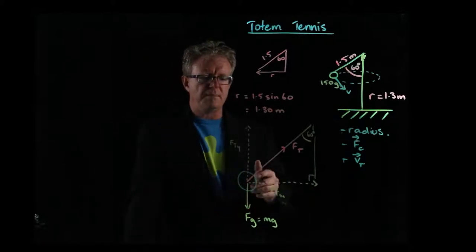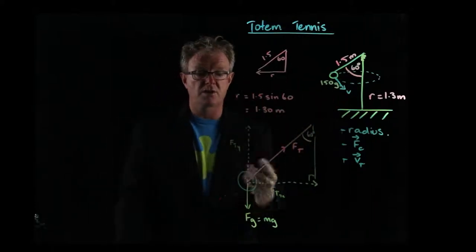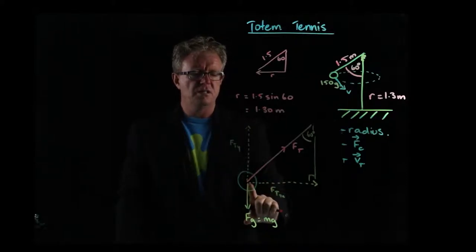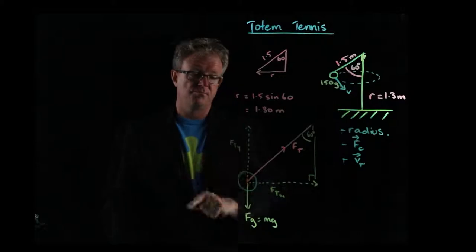Well, if we think about it, this ball is going around. It's not changing height. It's not going up. It's not going down. It's going around at that moment in time. So Fg in the y component is equal and opposite to Fy, Fty.